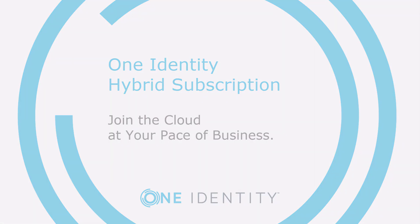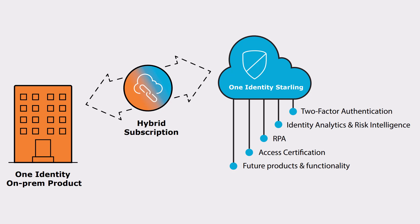The newest version of our OneIdentity on-prem products will offer a OneIdentity hybrid subscription, which helps our customers transition to a hybrid environment on their way to the cloud. The subscription enables you to join your OneIdentity on-prem solutions to our OneIdentity Starling Software as a Service platform, giving your organization immediate access to a number of cloud-delivered features and services, which expand the capabilities of your OneIdentity on-prem product. We will continuously make available new products and features on our OneIdentity Starling SaaS platform.